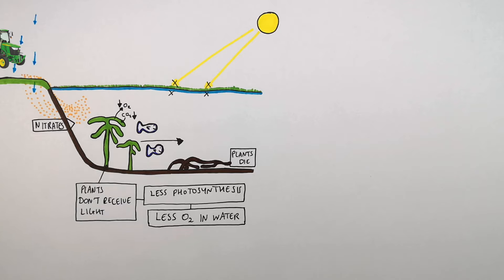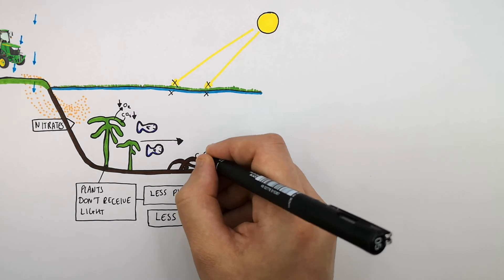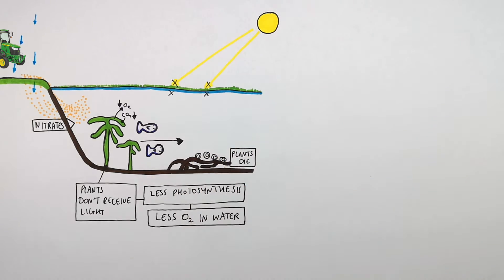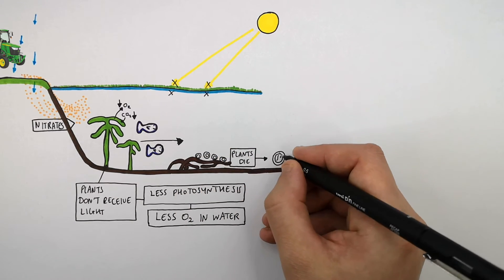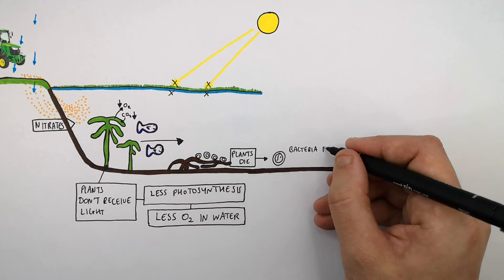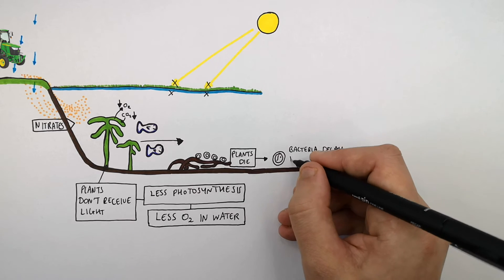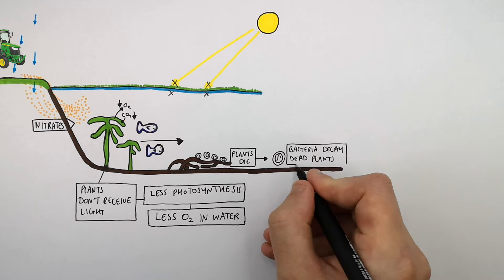These bacteria are called decomposers. They are going to decay the dead plant material, and by doing so these decomposers are going to increase in numbers.